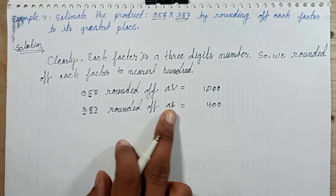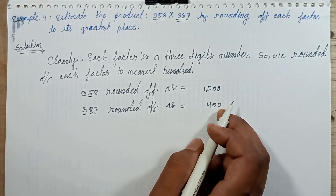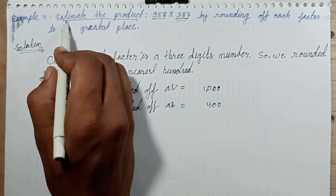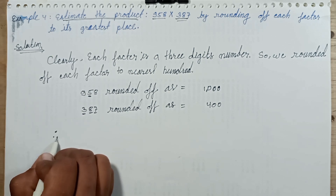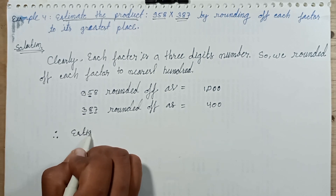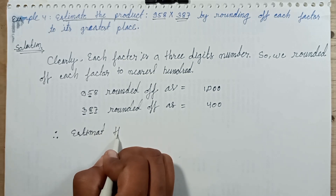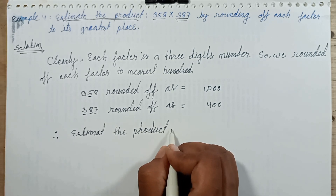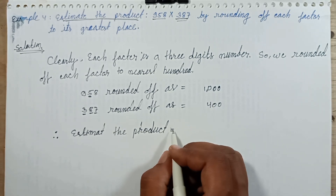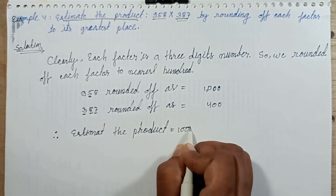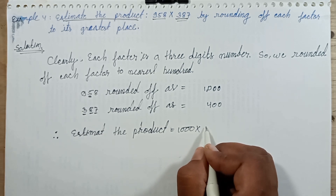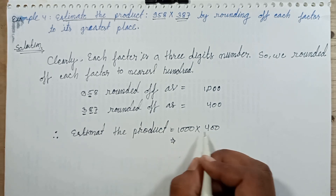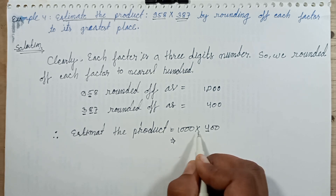So the estimated product is one thousand multiplied by four hundred. Therefore, the estimate product equals one thousand times four hundred. Let's multiply these numbers.